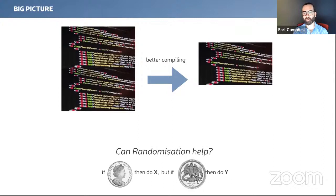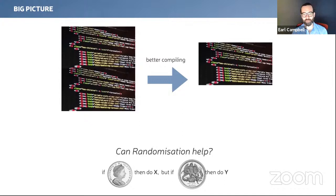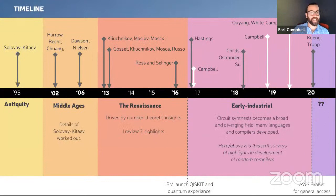Very briefly, because anyone listening to this conference knows what compilation is: it's the idea that you want to compress the number of gates in some algorithm. You want to take some large, messy code for a quantum algorithm and compress it down to something smaller and leaner. Most people, when they think about compilation, think about some deterministic process where you put something in and get something definite out. But the question I want to ask in this talk is: can randomization help? By randomization I mean a series of coin tosses in the algorithm, where you decide to do one gate or a different gate depending on the outcome.